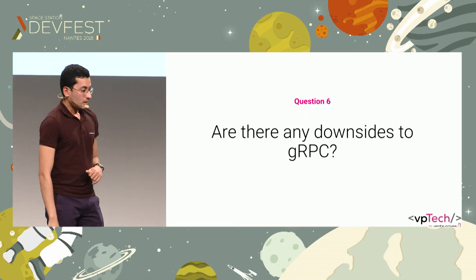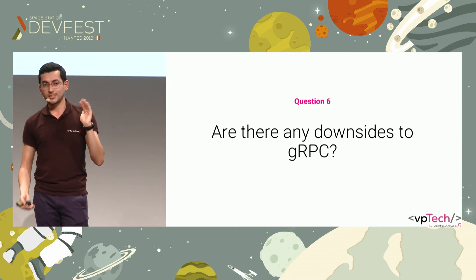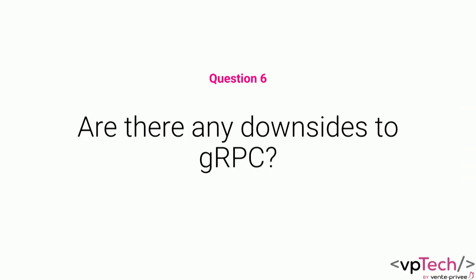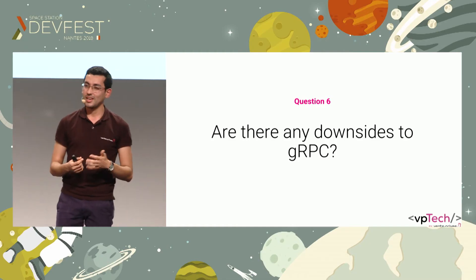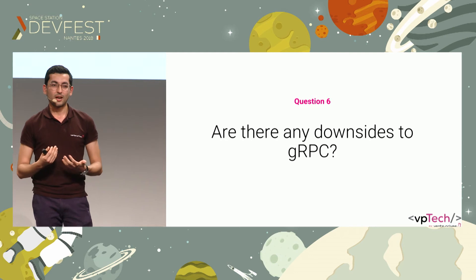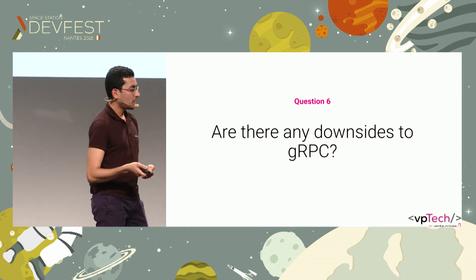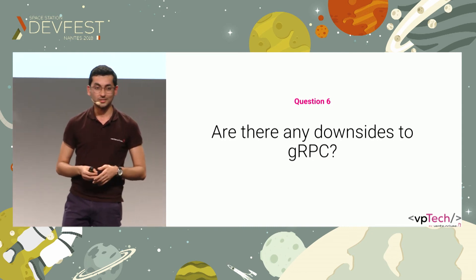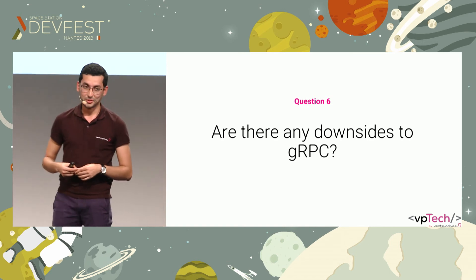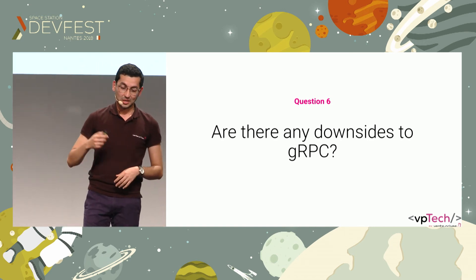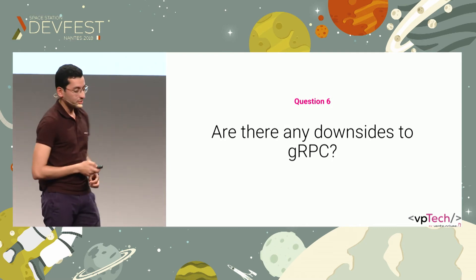I must warn you — we've seen a lot of advantages, but not everything is rosy, it's not all rainbows and butterflies. We can have some problems. So I ask myself: what are the problems I encountered when working with gRPC? And this is my last question — I hope we break the ice and I'll get some questions in return. Are there any downsides to gRPC?